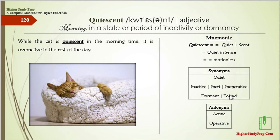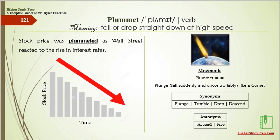The antonyms of quiescent are active or operative. Plummet means to fall or drop straight down at high speed. Mnemonic: plummet — plunge or to fall suddenly and uncontrollably like a comet. Synonyms are plunge, tumble, drop, or descend. A stock price plummeted as Wall Street reacted to the rise in interest rates.